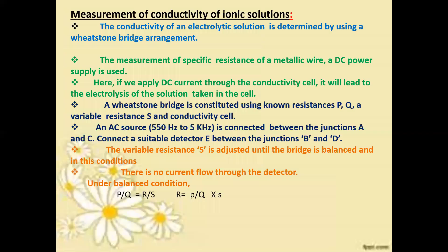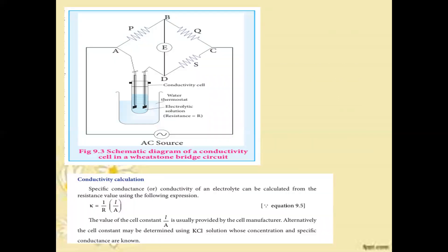We substitute the calculated R value into the formula. We know L, the length of the cell, which is the distance between the two electrodes. A is the cross-sectional area of the electrodes, which are cut in a circular shape. Substituting these gives us kappa, the conductance of the electrolytic solution.